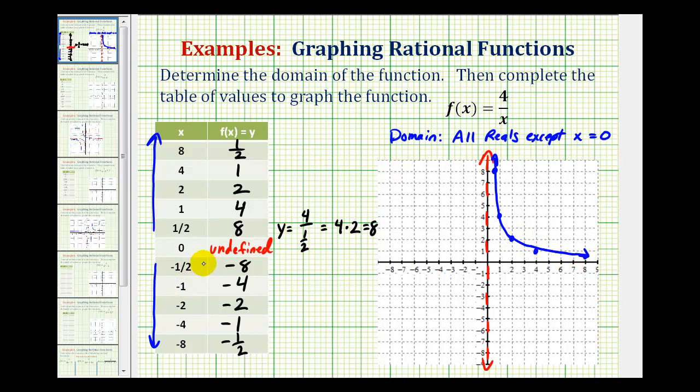Now we'll plot the values where x is less than 0. So we have negative 1 half, negative 8, that's here. Negative 1, negative 4. Negative 2, negative 2. And negative 4, negative 1. And then negative 8, negative 1 half would be here. So this piece of the graph looks something like this.